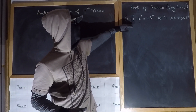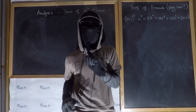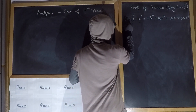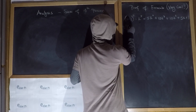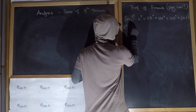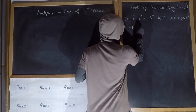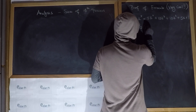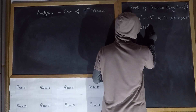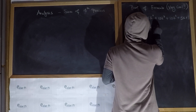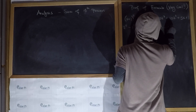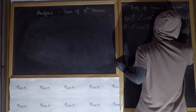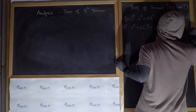We begin on the left-hand side of the equal sign by setting k equal to 1. k+1 is obviously 2, so we get: when k is equal to 1, we get 2 to the 5th minus 1 to the 5th, and on the right-hand side that's going to equal 5 times 1 to the 4th, plus 10 times 1 cubed, plus 10 times 1 squared, plus 5 times 1, plus 1.